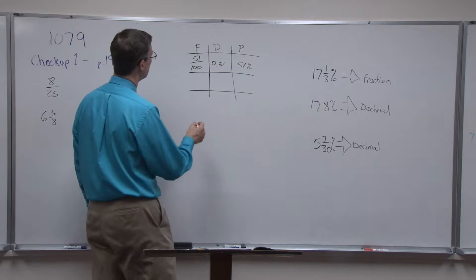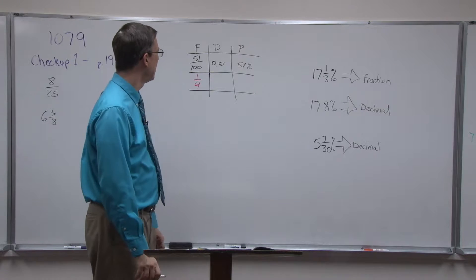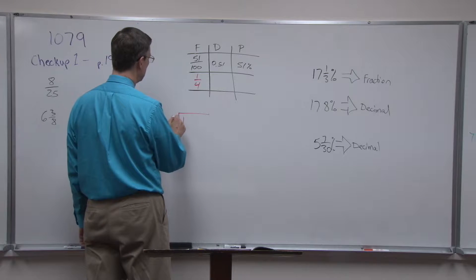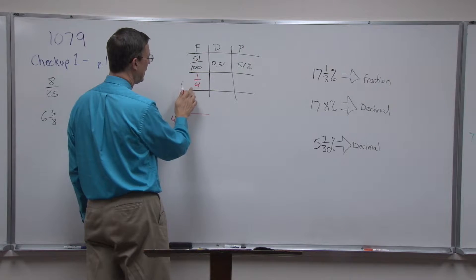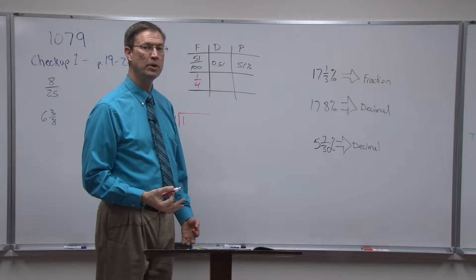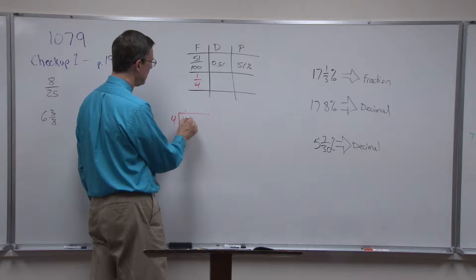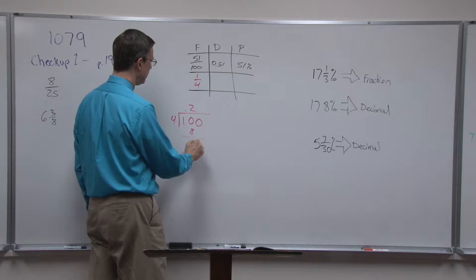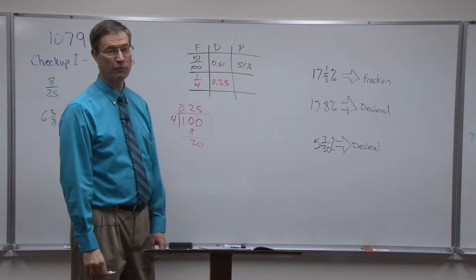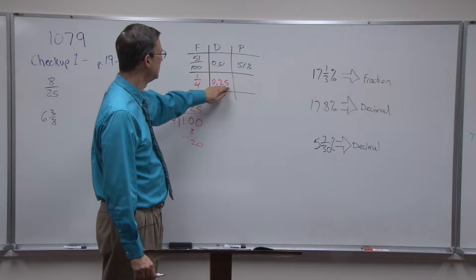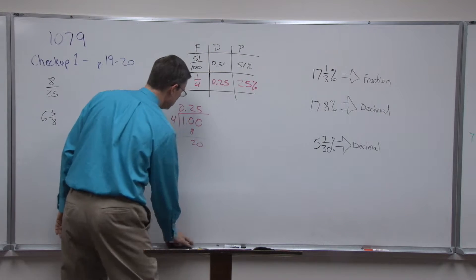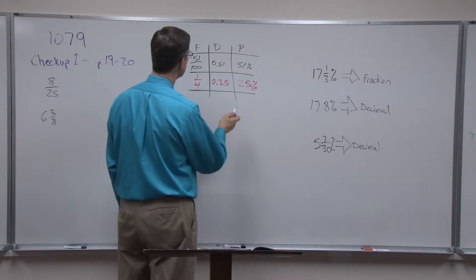Let's say we start with the fraction one-fourth and want to find it as a decimal. Put the one under the doghouse — the top number always goes under the doghouse — and divide by four. We always put a decimal after the number, just like a period after a sentence, then tack on zeros. Dividing, 25 goes into the remainder and the answer is 0.25. Then move the decimal twice and we have the percent.